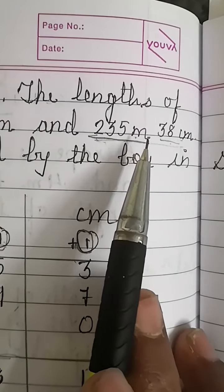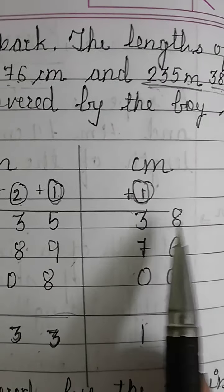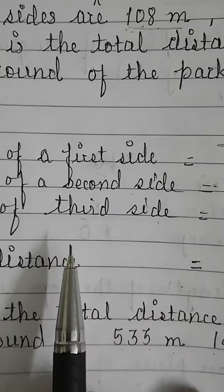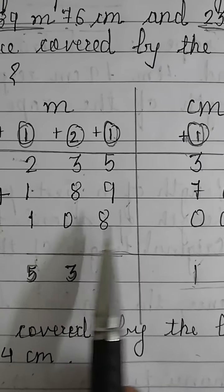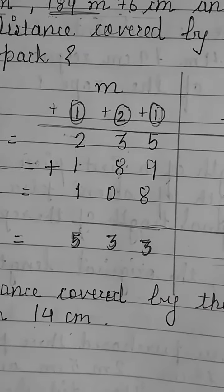Let's write the solution. Length of the first side is 235 meter 38 centimeter, length of the second side is 189 meter 76 centimeter, and length of the third side is 108 meter 0 centimeter. To find the total distance covered by the boy in one round, we will add all the lengths of the three sides.